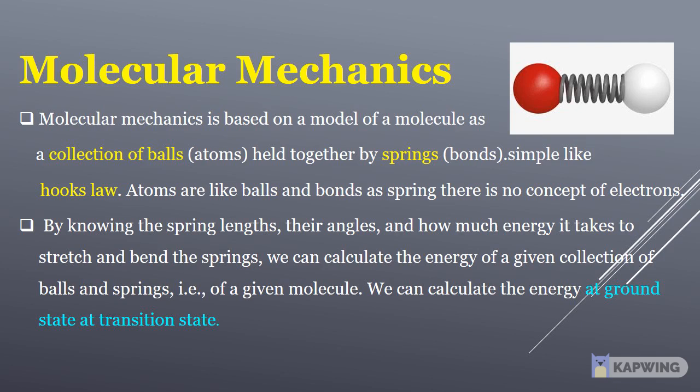By knowing the spring lengths, their angles, and how much energy it takes to stretch and bend the springs, we can calculate the energy of a given collection of balls and springs, of a given molecule. We can calculate the energy at ground state or transition state.